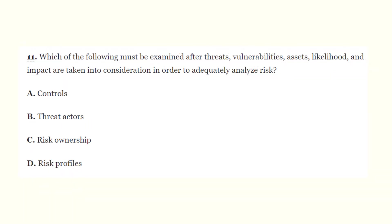Question 11: Which of the following must be examined after threats, vulnerabilities, assets, likelihood, and impact are taken into consideration in order to adequately analyze risk? The correct answer is A - controls. Existing controls must be examined to determine how well they reduce likelihood or impact to a system in the event that a threat actually occurs.